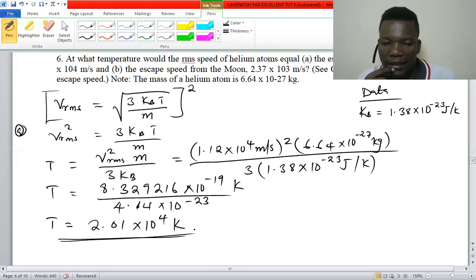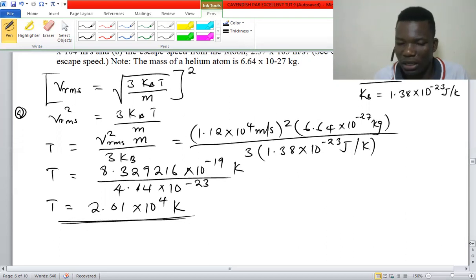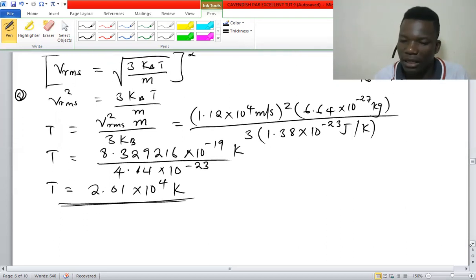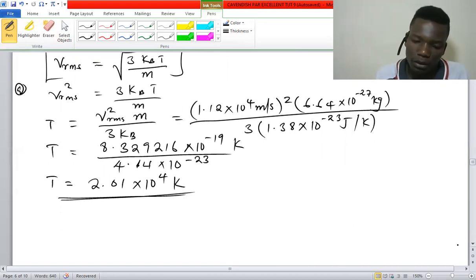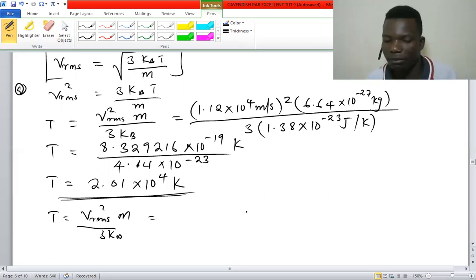That would be for part (a), the temperature when the escape speed is that on Earth. And then on the Moon, it's just the speed that changes; otherwise, the same procedure and the same formula. Everything else remains the same.